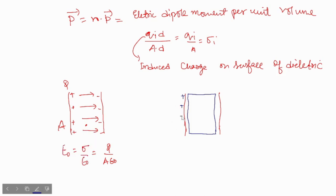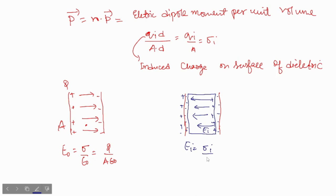Now if you put a dielectric inside: these surfaces are having positive charge, so on this surface of the dielectric the negative charge will be induced, and on the other side having negative charge, positive charge will be induced. The direction of electric field inside the dielectric will be in the opposite direction, and its magnitude E_i will be sigma_i upon epsilon-naught, that is qi upon A times epsilon-naught.